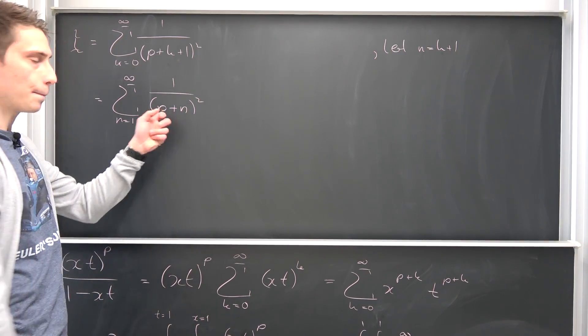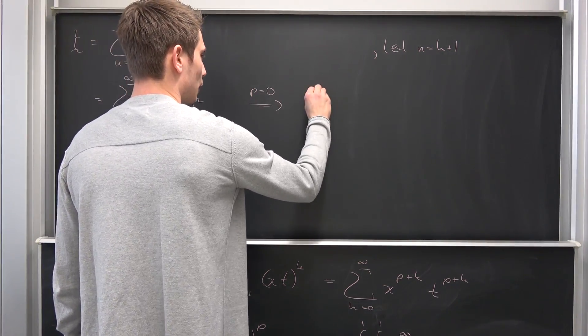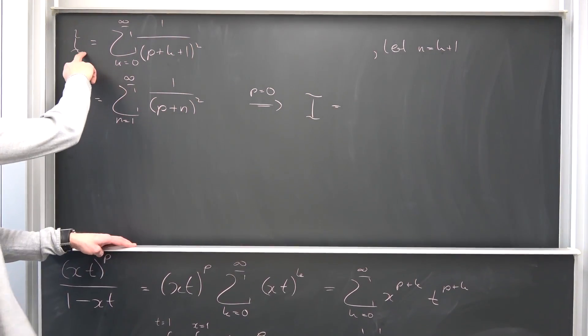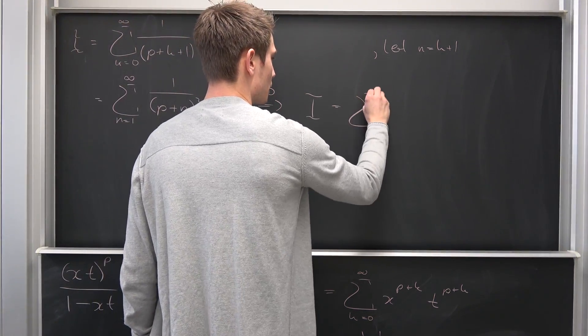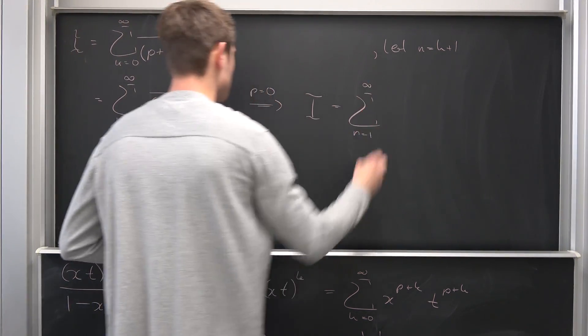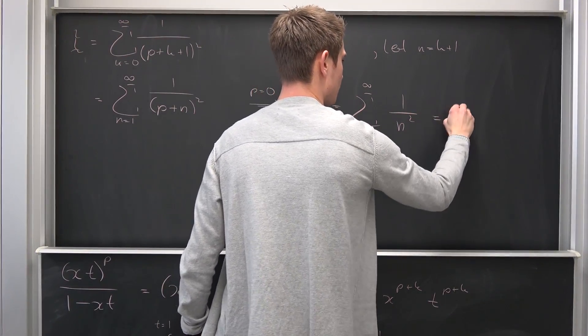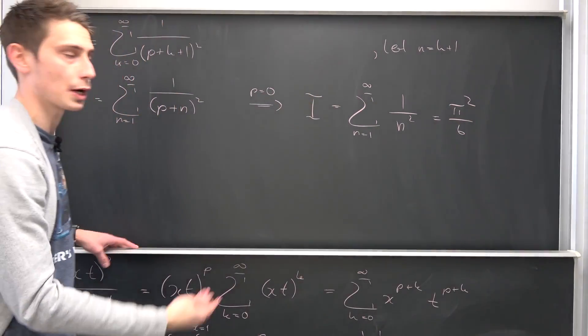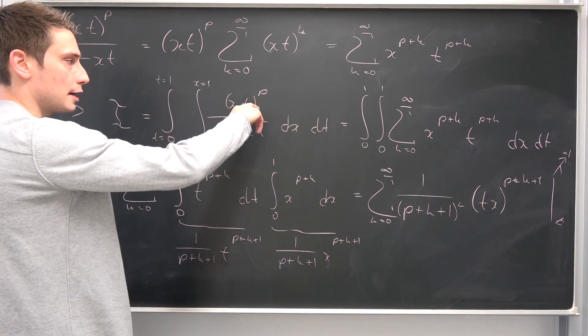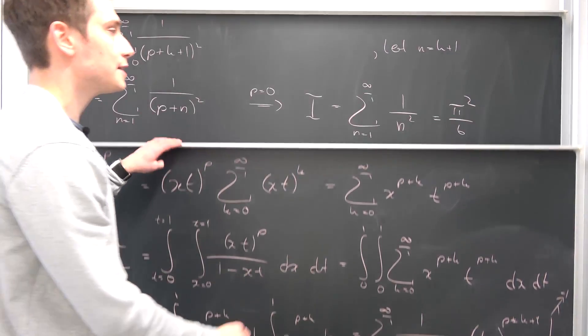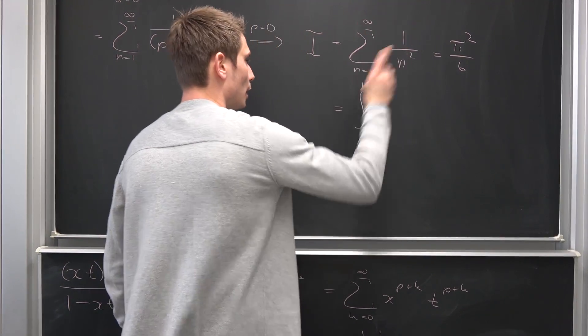And here's a little special case. Why not let p be equal to 0? Then our integral I is now nothing but the sum running from n equals 1 to infinity of 1 over n squared, which is nothing but pi squared over 6. But we also know what our integral is equal to if we apply this limit right here. p being equal to 0, x times t to the 0th power is just 1. So that's actually also equal to the double integral from 0 to 1 of the integral from 0 to 1 of—